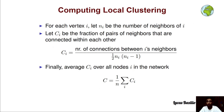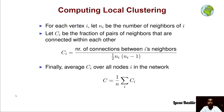If we want to compute by hand the local clustering, then for each vertex i, let's consider n_i to be the number of neighbors of i. Let's also consider c_i to be the fraction of pairs of neighbors that are connected with each other. The local clustering of vertex i is the number of connections between node i's neighbors, divided by one half of n_i multiplied by (n_i minus 1). Once we have computed the local clustering of each node, we compute the average by dividing by n, the total number of nodes in the graph.